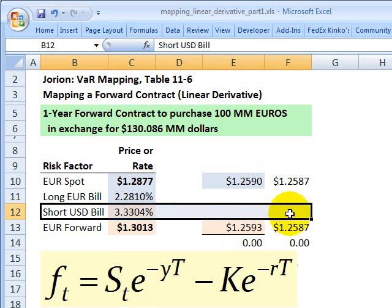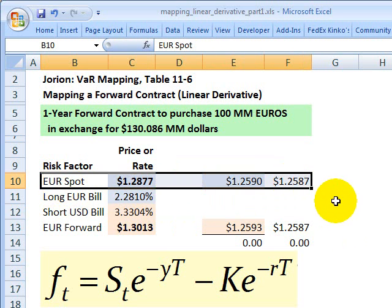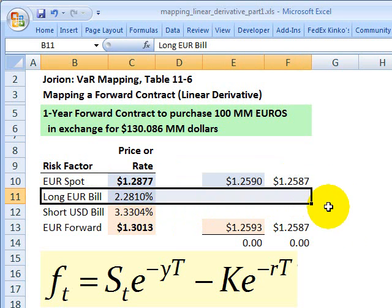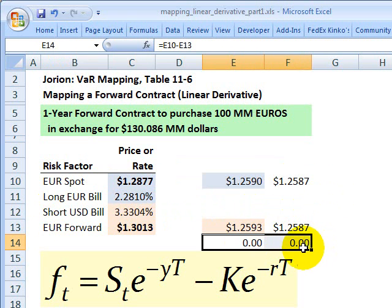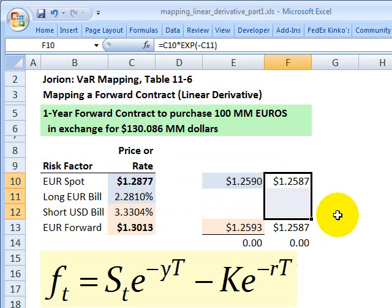And then our third factor is the domestic, in this case the U.S. riskless rate. So we have three factors: spot currency exchange rate, foreign risk-free rate, and domestic risk-free rate. By definition, we've shown the value of our forward contract is a function of all three risk factors.